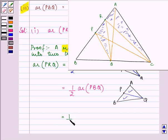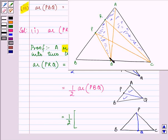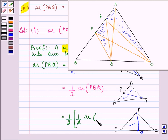Similarly, if you notice from the above figure, since it has a lot more triangles, I am taking those triangles which I need in every step. We have triangle PBC, and Q is the midpoint of BC. If you join PQ, PQ is the median of triangle PBC. So area of PBQ can be written as half of area of PBC.